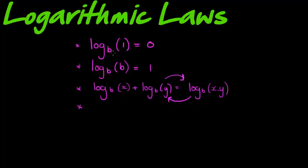Let's quickly recap: the first law says if the interior is one, for any base, the answer is zero. The second law says if the interior is the same as the base, the answer is one. Then we saw that if we're adding two logarithms with the same base, the interiors of those logarithms may be multiplied.